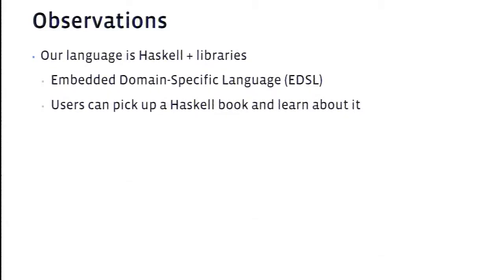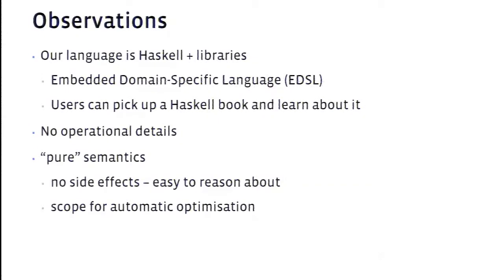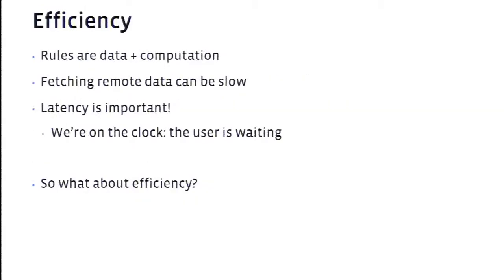The observations here: the language for writing rules is just Haskell and libraries — a fancy way of saying it's an embedded domain-specific language. We were keen that this language should be just standard Haskell with no changed syntax. We looked at designs involving a layer on top of Haskell, but thought it's really important that users can just buy a Haskell book and learn from it. There are no operational details here. The semantics are pure — any sub-expression always has the same meaning, there are no side effects, we're only reading data, not writing. And that gives us scope for automatic optimizations.